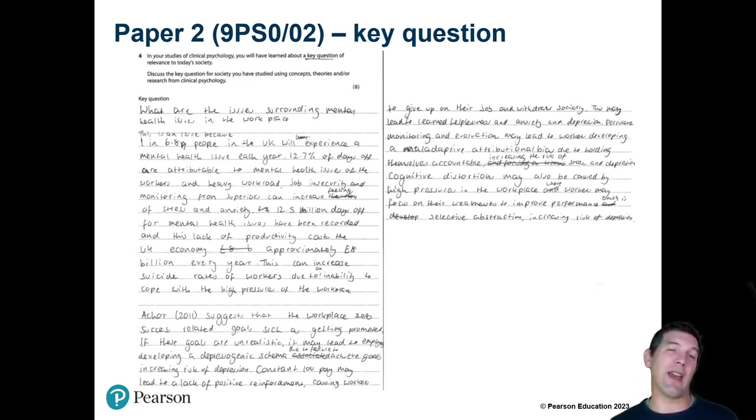Both the AO1 and AO2 are judged to be at the top level four here. Accurate thorough knowledge and understanding about the issues surrounding mental health in the workplace including days off, lost production and the effects on workers. Whereas the evaluation deals with unrealistic goals, low pay and those key issues, and that was awarded eight out of eight.